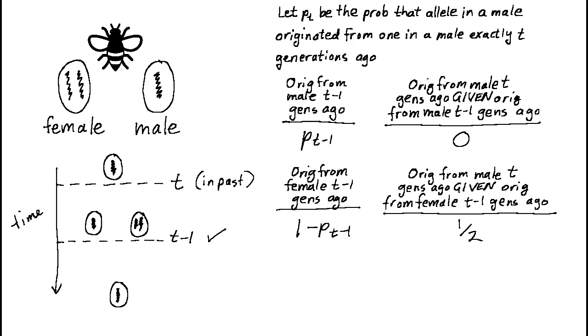Let's put all the information together now to calculate p sub t. With probability p sub t minus 1, the allele originated from a male t minus 1 generations ago, in which case our answer is zero. The flip side is that with probability 1 minus p sub t minus 1, the allele originated from a female t minus 1 generations ago, in which case our answer is a half.